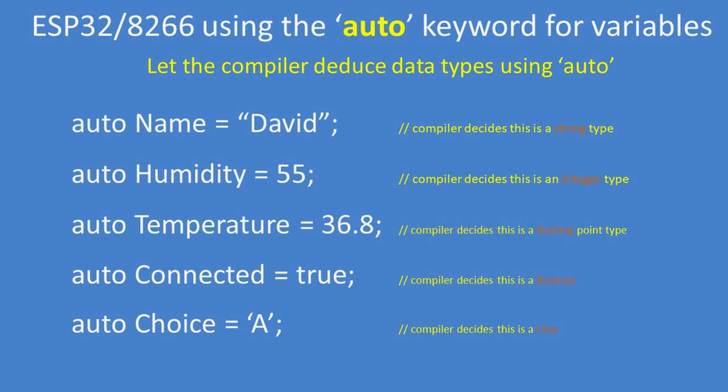But you can let the compiler infer what the variable types should be by prefixing the variable name with the keyword auto. So auto name equals David—the compiler decides that must be type string. Auto humidity equals 55—integer. Auto temperature equals 36.8—float. Auto choice equals 'A'—char. It's a very useful facility in C++.